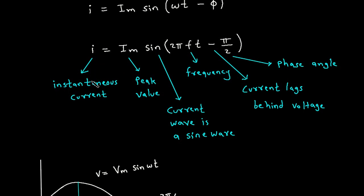Here I is the instantaneous current, Im is the peak or maximum value of current, and the sine indicates the current wave is a sine wave. The frequency is f, and the negative sign represents that current lags behind voltage; π/2 is the phase angle.